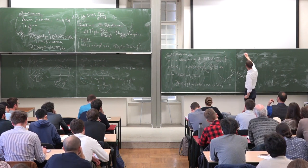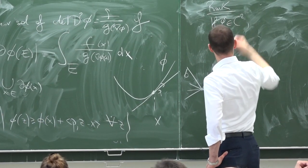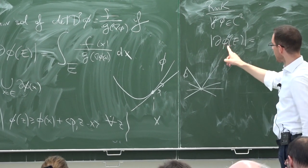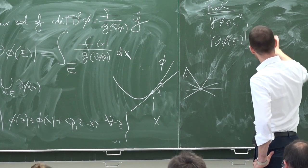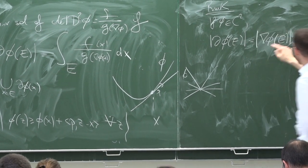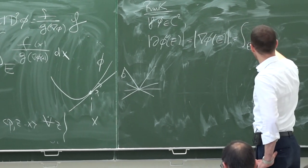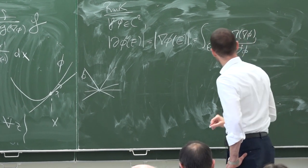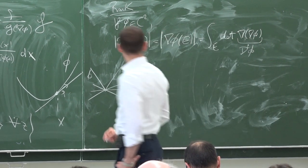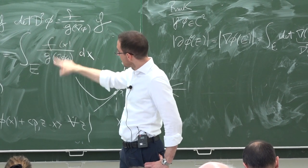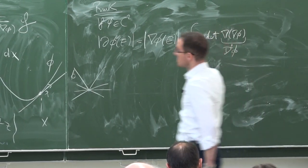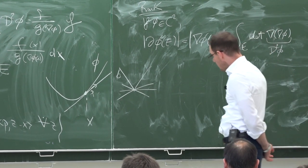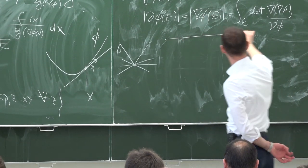If phi is C2, then the subdifferential is just the gradient, so this is the image of E through the gradient. By the change of variable formula this is the integral over E of the determinant of the Hessian of phi. So I'm just writing that the integral of the determinant over E equals the integral of F over G over E — writing in a weak sense this equality. This is another notion of weak solution not a priori connected to optimal transport.